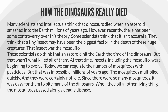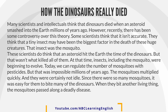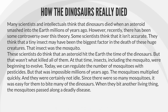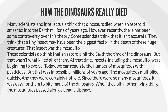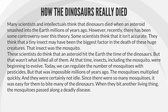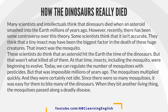How the dinosaurs really died. Many scientists and intellectuals think that dinosaurs died when an asteroid smashed into the earth millions of years ago. However, recently, there has been some controversy over this theory. Some scientists think that it isn't accurate. These scientists do think that an asteroid hit the earth in the time of the dinosaurs, but that wasn't what killed all of them.